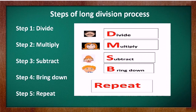Then Subtract — S stands for Sister. And Bring down — B stands for Brother. So in our family, if we maintain the order, we can also maintain the steps of long division: Dad, Mom, Sister, Brother. Then you repeat the process — Divide, Multiply, Subtract, Bring down — and repeat until you get 0.